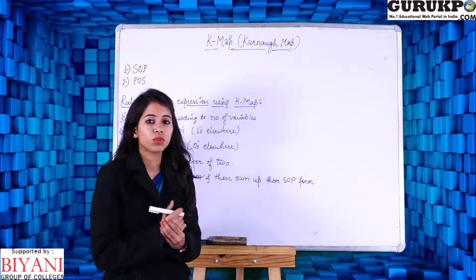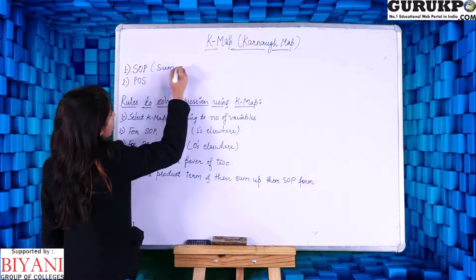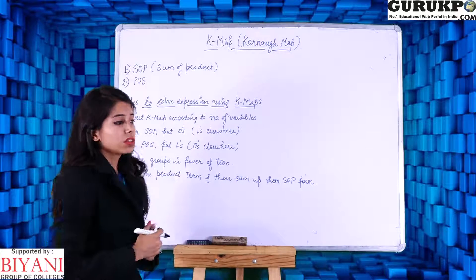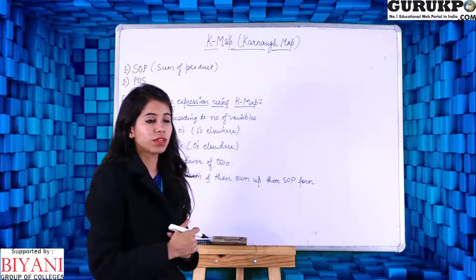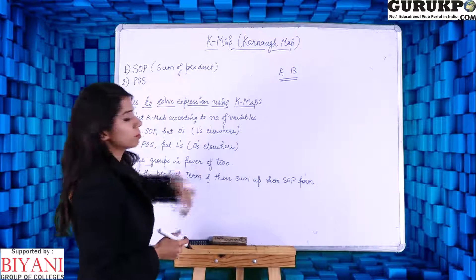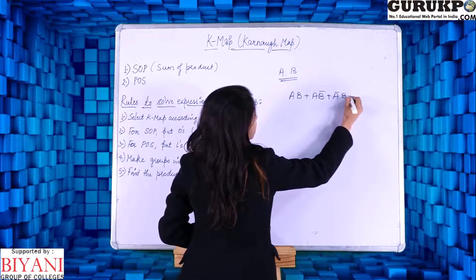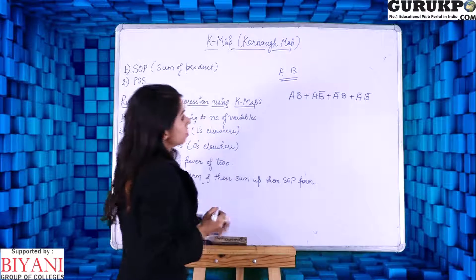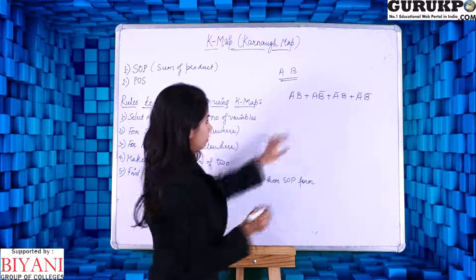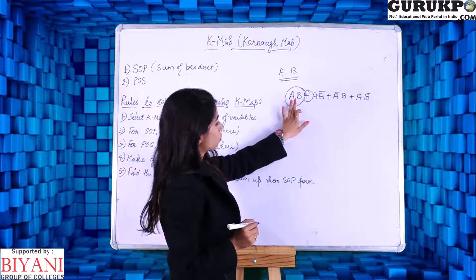Before moving to the KMAP, we should know two things: SOP form and POS form. First one is SOP form. SOP stands for Sum of Product. Since the name implies, it is the sum of product terms. For example, with two variables A and B, in SOP form we can write: AB plus AB̄ plus ĀB plus ĀB̄. This equation is the sum of product terms, where AB means A dot B. This expression is the SOP form.